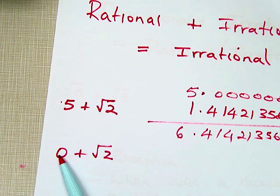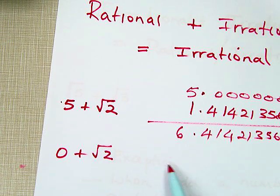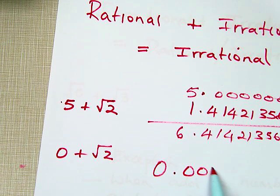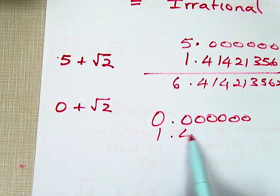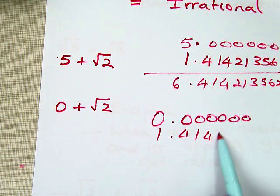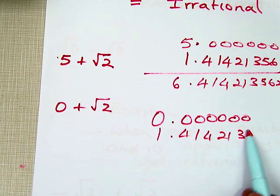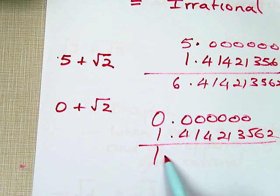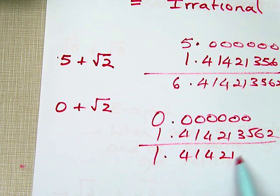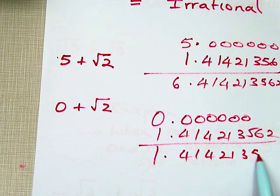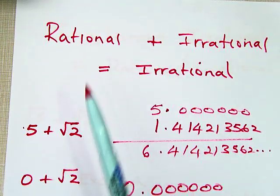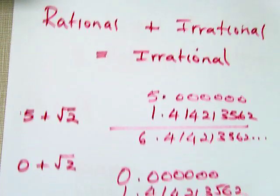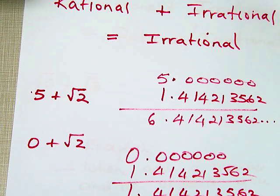If I add 0, which is rational, to the square root of 2, that still gives me an irrational number. The 0 fills all the spaces and I still get 1.414213562. So rational plus irrational is always equal to irrational.